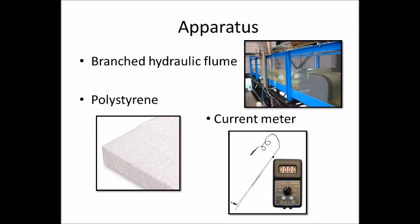Now I will present the apparatus used during this project. First, we used a bench hydraulic flume to determine the flow depth with channel alignment, as stated in the objective. Next, we used polystyrene as an obstruction to determine the Manning's roughness coefficient with different degrees of obstruction.